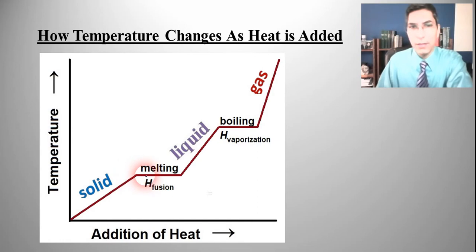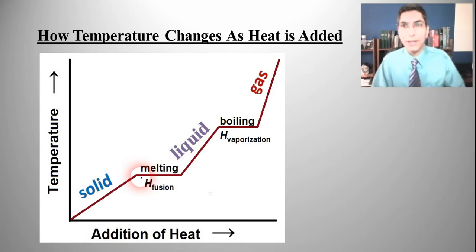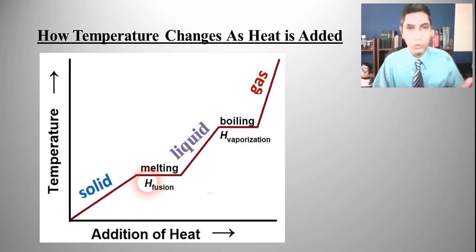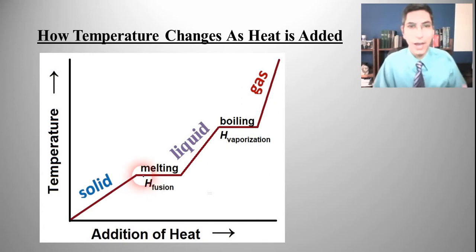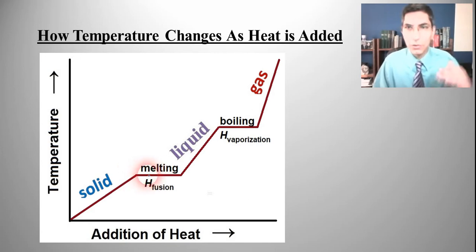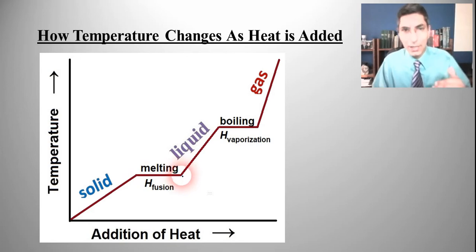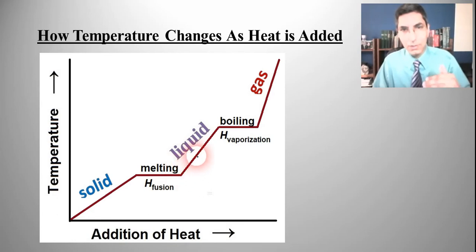Notice that as it melts the temperature actually doesn't change. This is a surprise to some new chemistry students because some students have assumed that when you add heat or as a substance melts it's getting warmer. But that's actually not happening. As a substance melts we're still adding heat but the temperature stays the same. Once it's all melted, we add heat and then it keeps going up as a liquid, increasing in temperature until it gets to the boiling point.